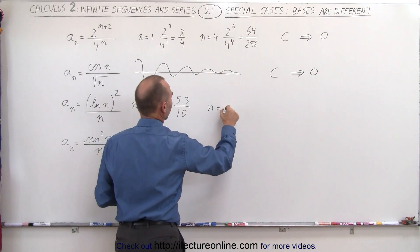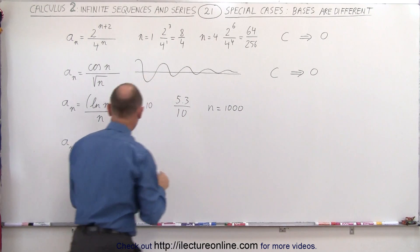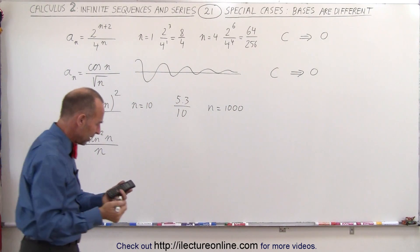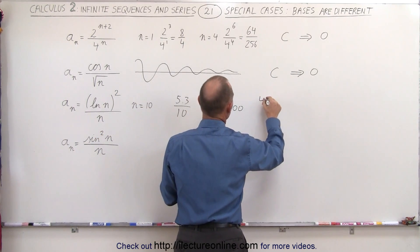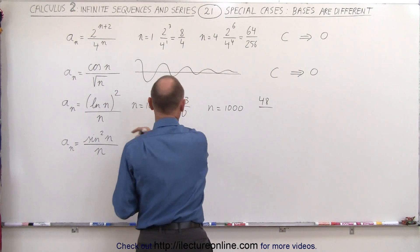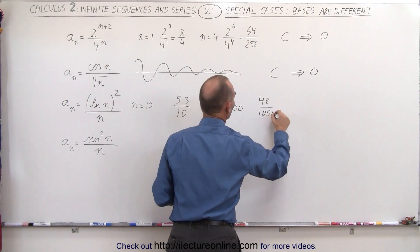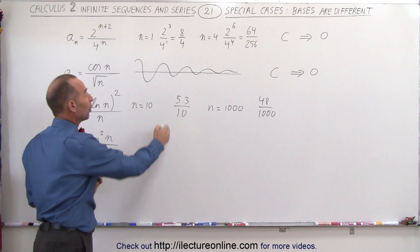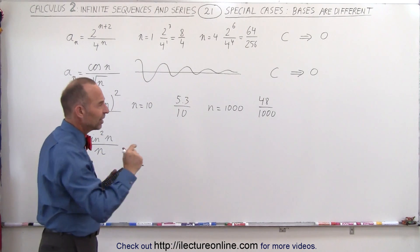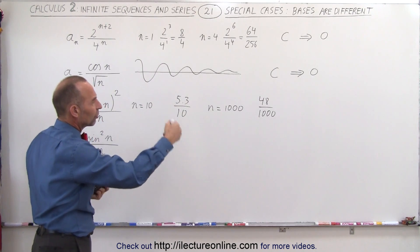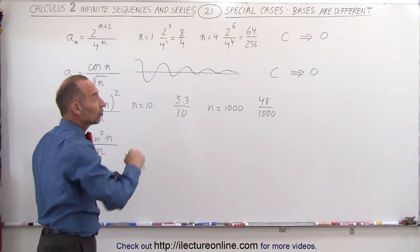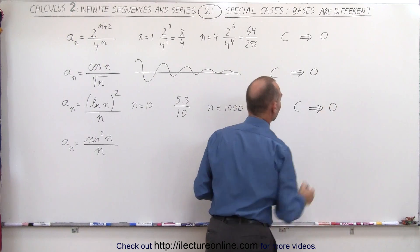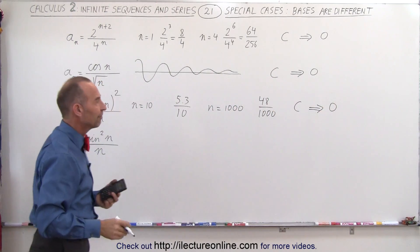Let n equals 1,000. When n is 1,000, you take the natural log of 1,000, you square that number, and you get 47.7, about 48, divided by 1,000. Now notice that the numerator is less than 5% the value of the denominator, where here it was more than 50%. The ratio, as n becomes larger and larger, becomes smaller and smaller. The sequence will converge to the value of 0 as n approaches infinity.